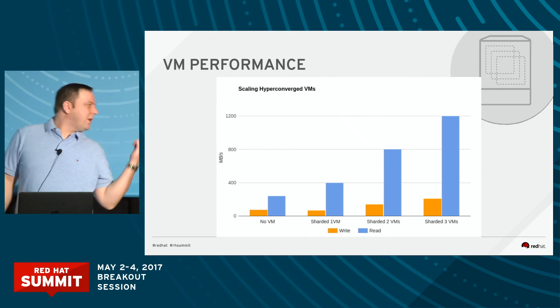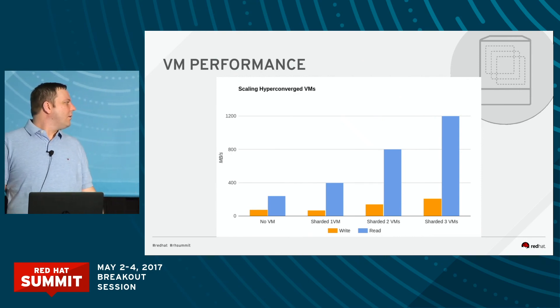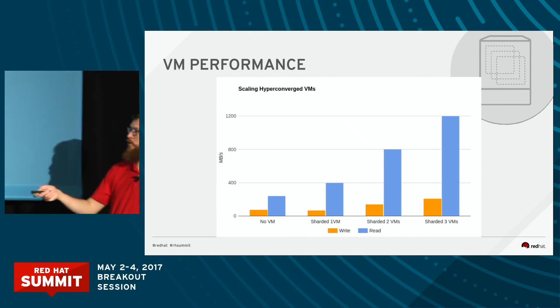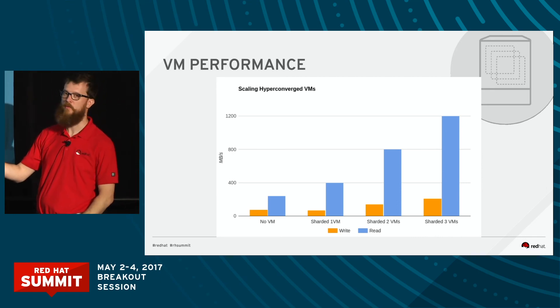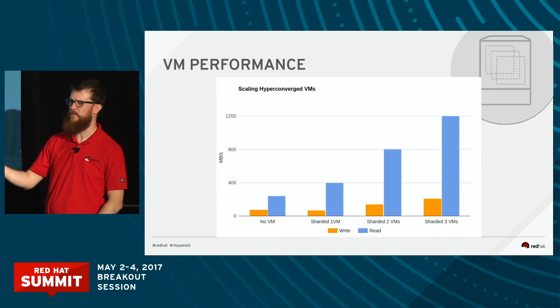We'd kind of expect this blue line to be about the same — this is a control and this is a VM running a single load. We'd expect that to be about the same, but it's actually better. So that's interesting.